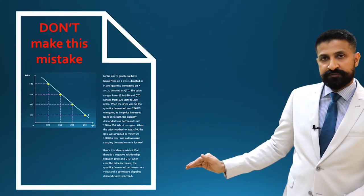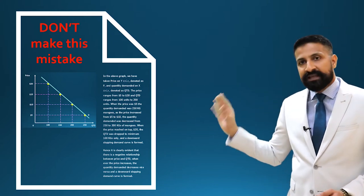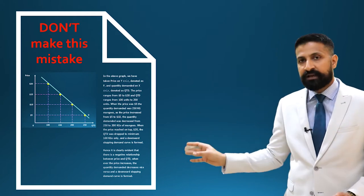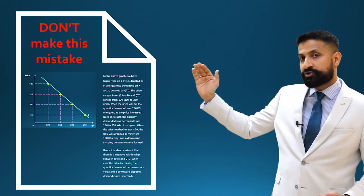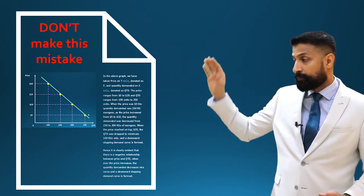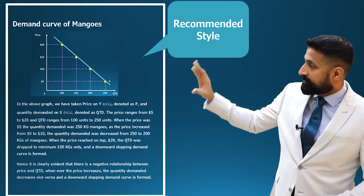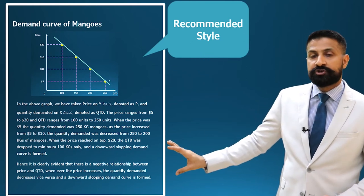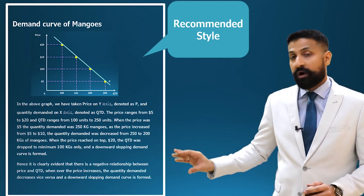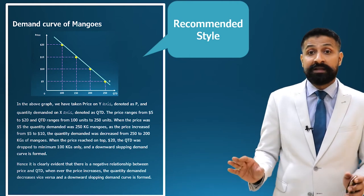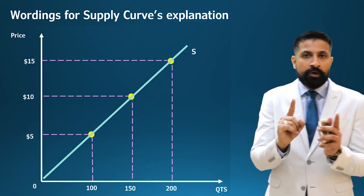Now, a serious mistake students make: they draw a small graph in the corner and write the explanation right next to it. That is totally wrong. Please don't do it — you will lose grades. Approximately a quarter of your page should be covered by the graph. Draw it large. The most preferable format is: graph on the top, then explanation beneath the graph. At least two paragraphs should be used when explaining the graph.